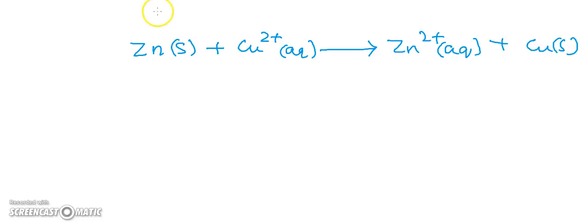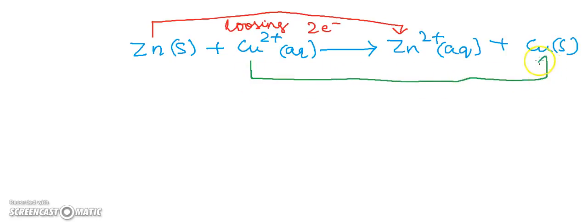What is happening here? You can see zinc metal loses two electrons and forms zinc dipositive ion. Zinc metal is losing two electrons and what is happening to the copper? Copper ion is gaining two electrons and forming the copper metal, so here it is gain of two electrons.